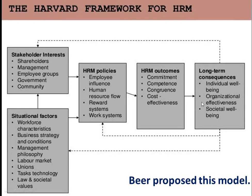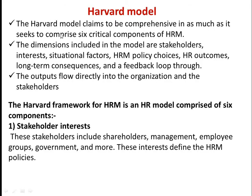In the long-term consequences: individual well-being, employee career growth, individual growth, organizational effectiveness — what the HR department does is add value to organizational performance, giving organizational effectiveness. And lastly, societal well-being. This model was proposed by Beer. It talks about the six critical components of HRM. The dimensions include stakeholder interest, situational factor, HRM policy choice, HR outcomes, long-term consequences, and the sixth one is the feedback loop.